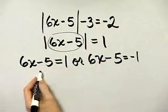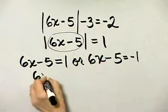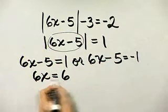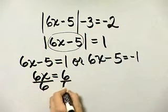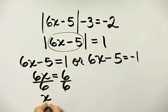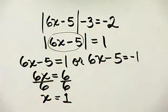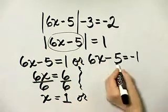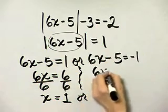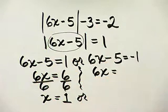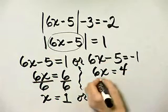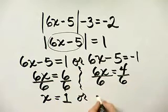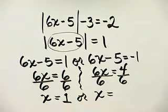If I add 5 to both sides of the first equation, I'll have 6x equal to 1 plus 5, or 6. Then divide both sides by the coefficient of x, and you'll have x equals 1 as one solution. For the second equation, I'll add 5 to both sides and have 6x equal to negative 1 plus 5, which is 4. Divide both sides by 6.